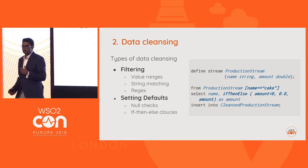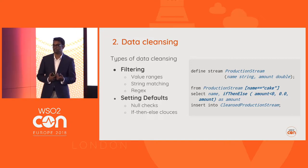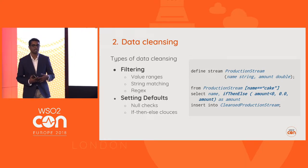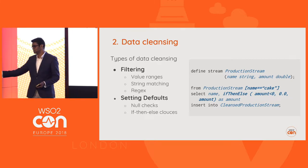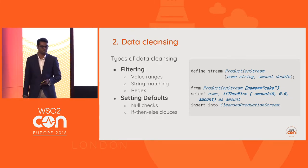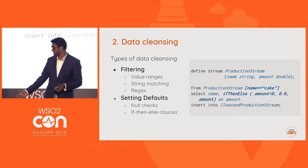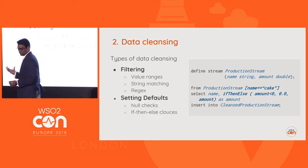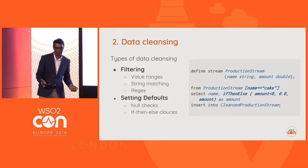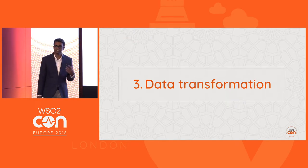When it comes to data cleansing, you can filter the data using value ranges, string manipulations, or regular expressions. You can also set defaults — for example, if data has null values. If one sensor sends pressure and temperature while another only sends temperature, you can handle that with null checks and if-then-else clauses. For example, in a production stream, if the item is 'cake' and the amount is less than zero due to a wrong reading, you reset it to zero.